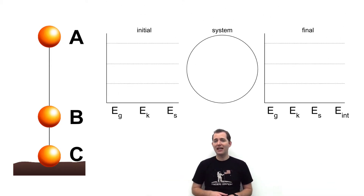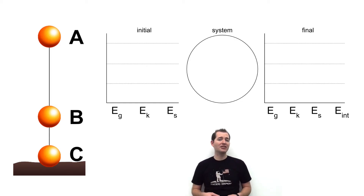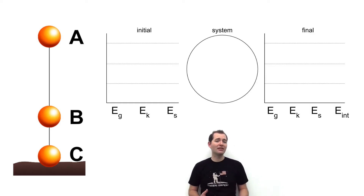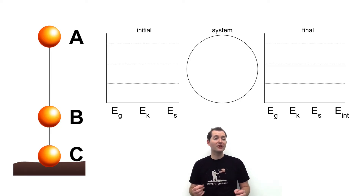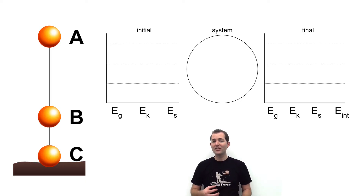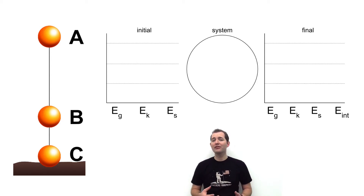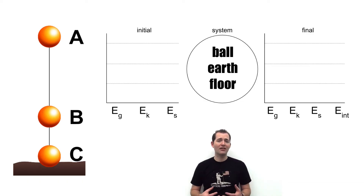Let's start with the basic LOL diagram. We've also included each of the energies we're looking at — gravitational potential energy, kinetic energy, and spring energy. The graph on the left represents our initial energy and the graph on the right represents our final energy. The first thing we must do is identify all of the objects included in our system. In this first example we're going to include the ball, the earth, and the floor in our system, all represented in the circle that represents our system in the LOL diagram.